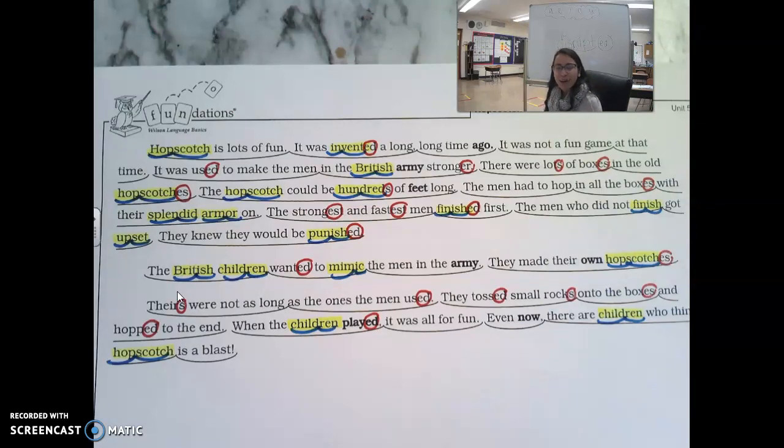What I want you to do right now is stop and think. Replay the story in your head. Think about it from the beginning to the end. And I'm going to stop and I'm going to think with you. Let's stop and think. I'm going to think what happened first, next, and last. First, men in the British army use hopscotch to train. Made them stronger. That's something I learned. Next, the British children mimicked or copied the British soldiers and made their own game. And last, the kids used small rocks and tossed them into boxes and played a fun game. That is so cool.